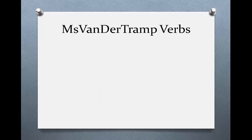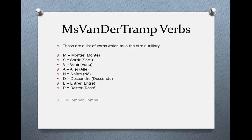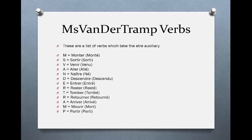So which are the Miss van der Tramp verbs? Miss van der Tramp is an acronym for a list of verbs which take être as the auxiliary. They are: monter (monté), sortir (sorti), venir (venu), aller (allé), naître (né), descendre (descendu), entrer (entré), rester (resté), tomber (tombé), retourner (retourné), arriver (arrivé), mourir (mort), and partir (parti).